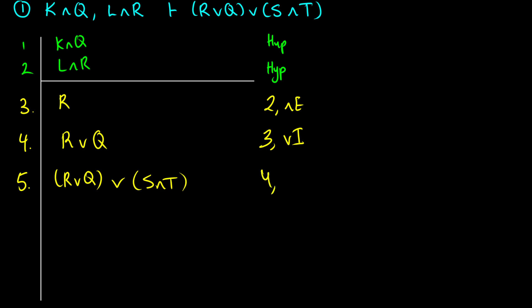So I'm just going to introduce S and T as that extra thing that adds on with the or. So from line four, I use or introduction, and there we go. That's the proof. We have shown that if we have K and Q and L and R, we have R or Q or S and T.